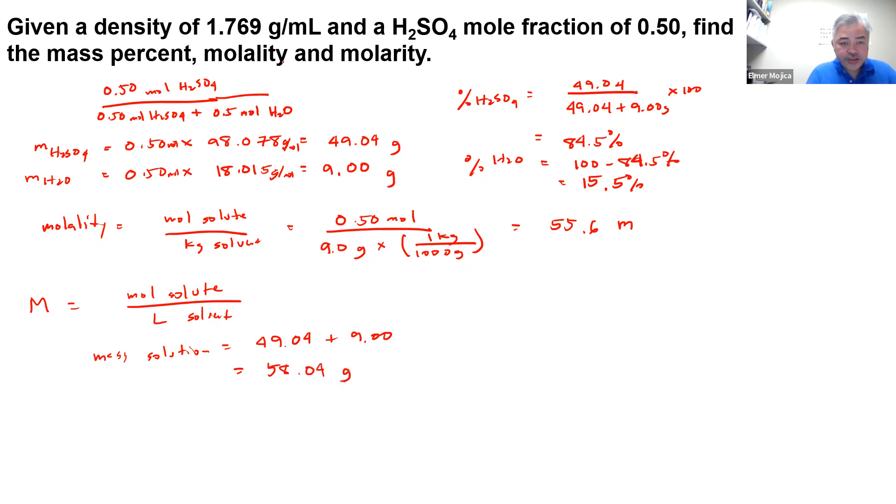Now, we have here the density, so we can get the volume. So volume is just equals to 58.04 grams. So for every 1 milliliter, you have 1.769 grams.